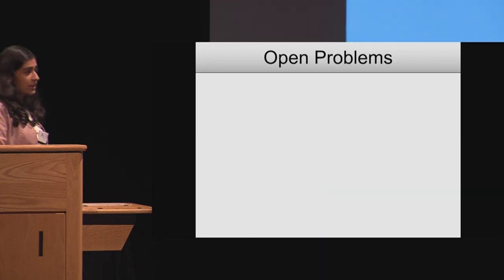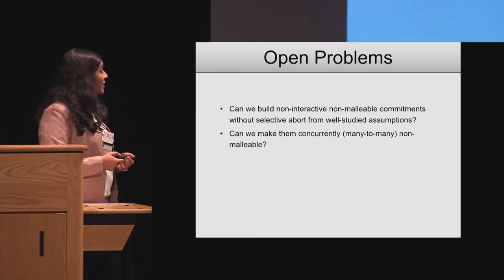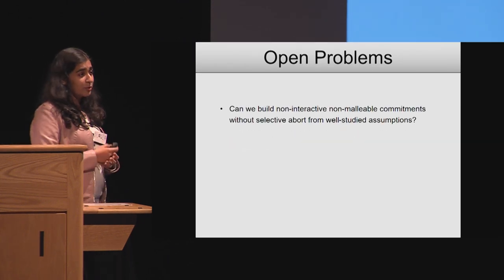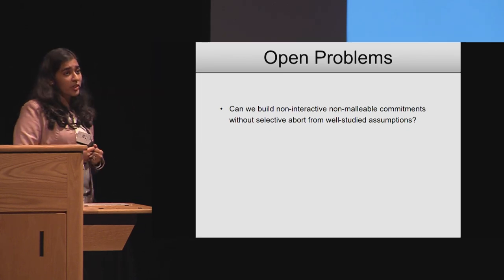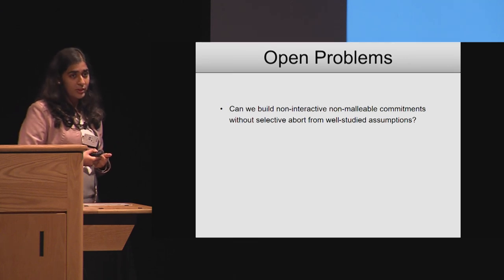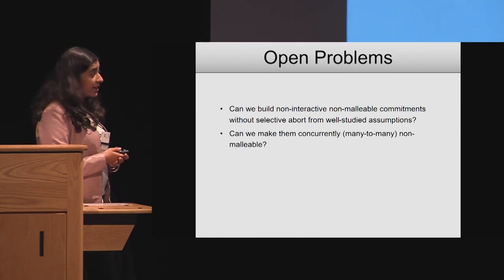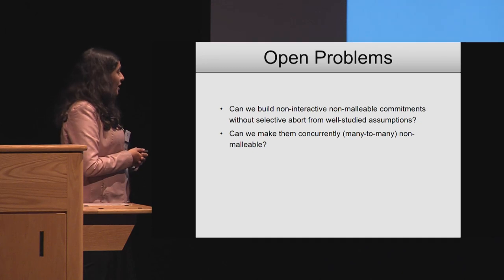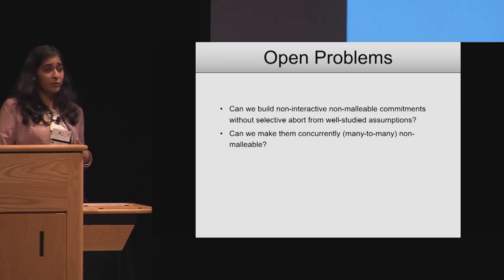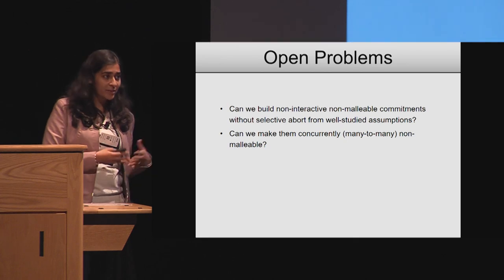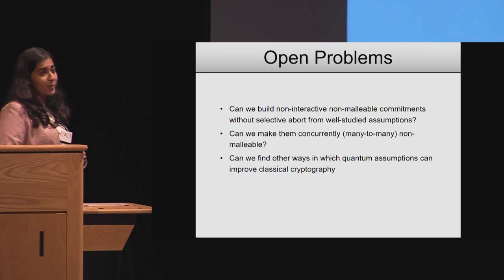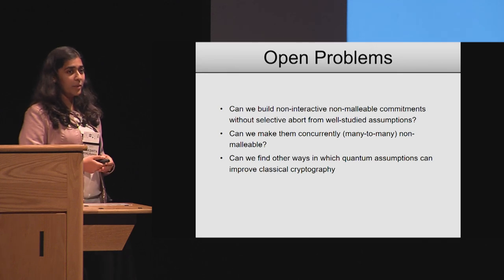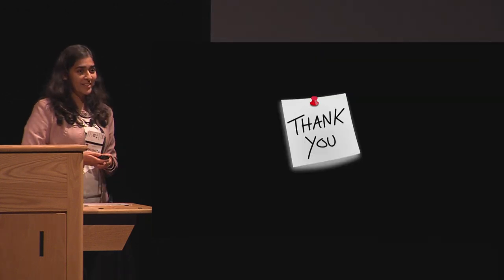That brings me to the open problems. It would be really interesting to remove this selective abort limitation and get non-interactive non-malleable commitments satisfying the strongest definition. Another open question is whether we can make them non-malleable in the many-to-many setting, which is true for some previous constructions from less well-studied assumptions, but not for ours. And finally, can we find other ways to use quantum assumptions to get better forms of classical cryptography? With that, I'd like to conclude. Thank you, and I'm happy to answer any questions.